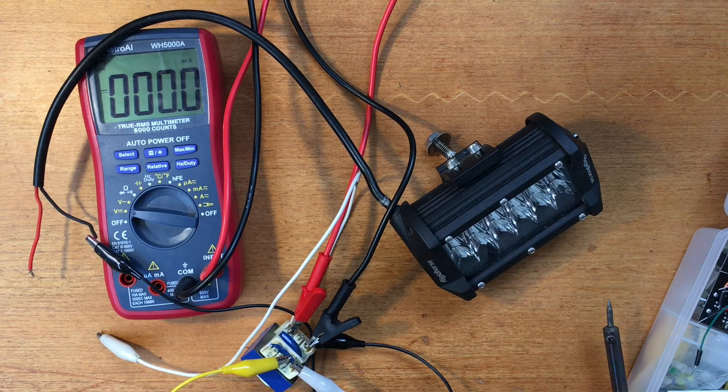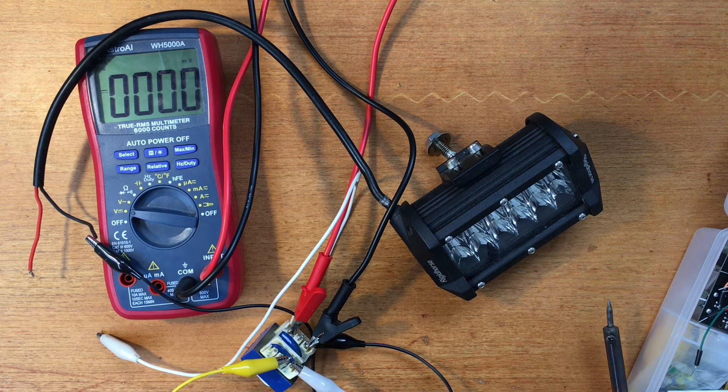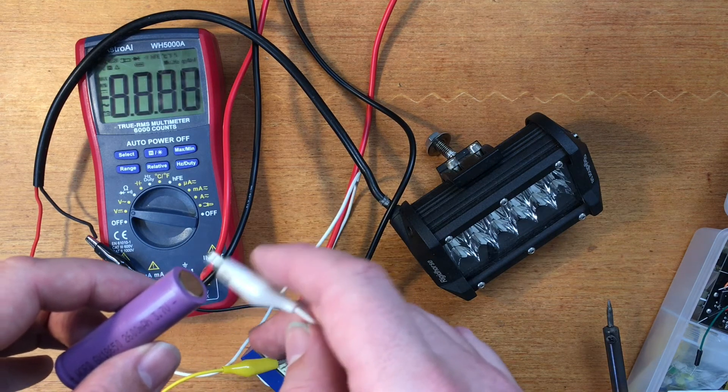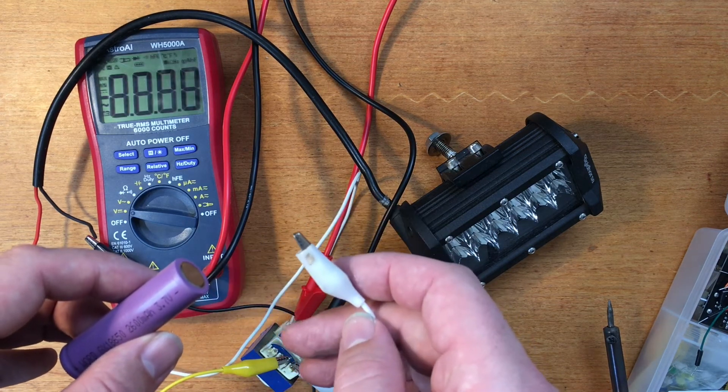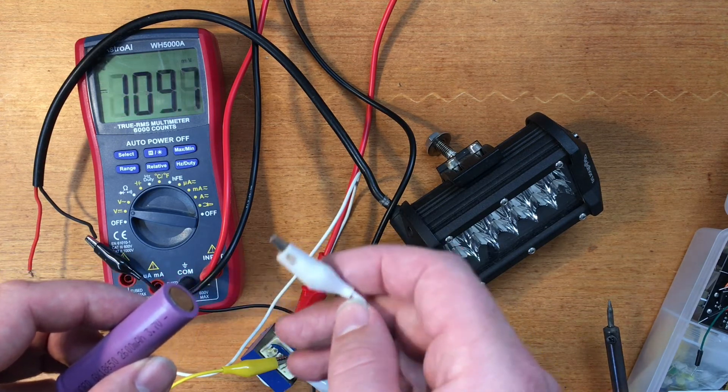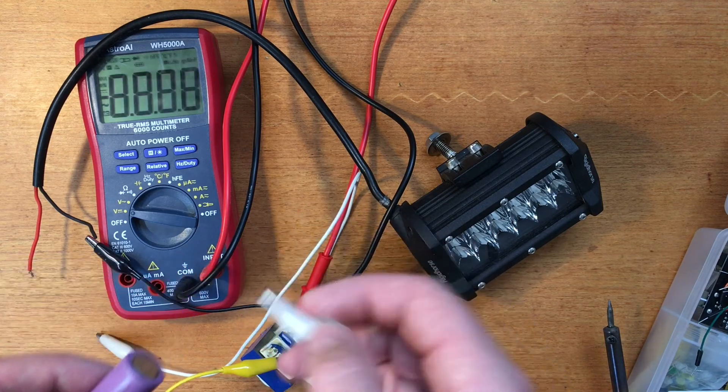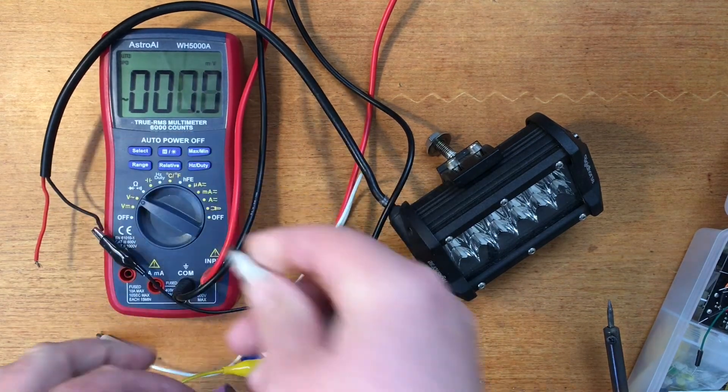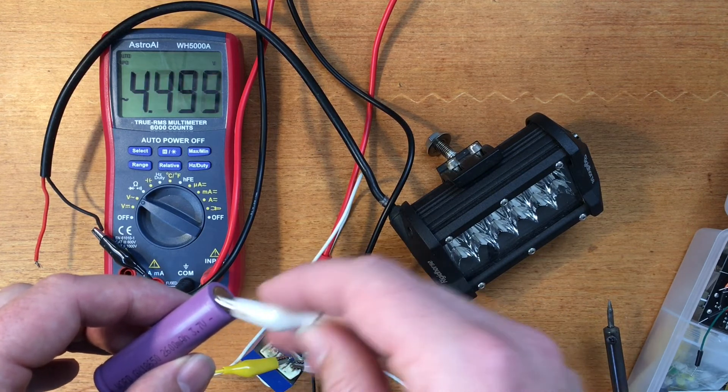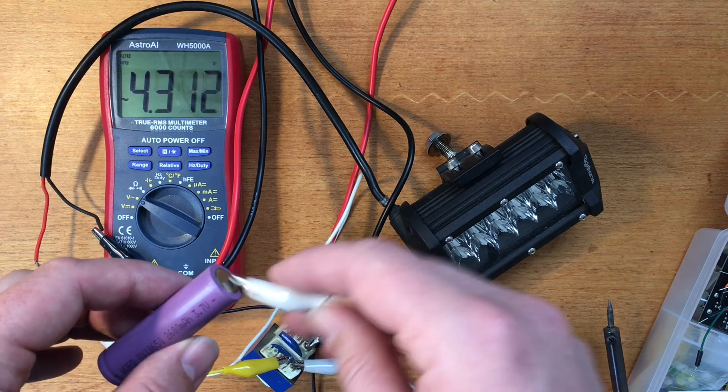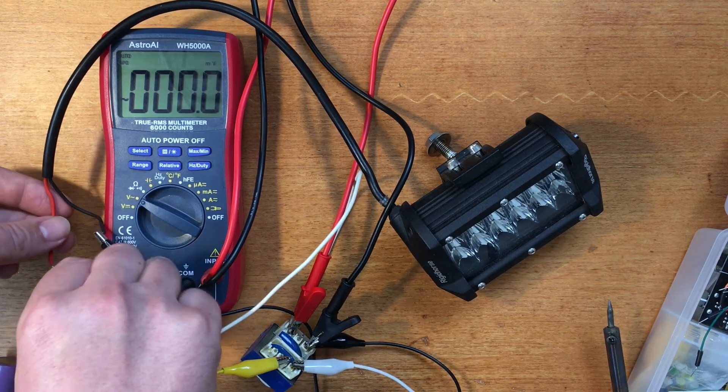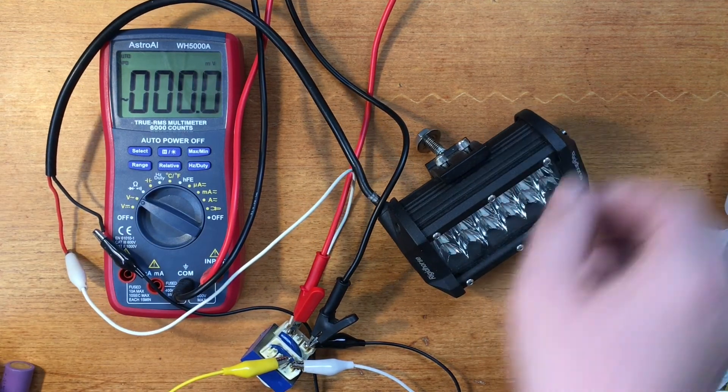Interesting though, it resets the meter - must be EMF interfering with it. Watch. If I put it on AC you can briefly see it's about five volts. There we go.